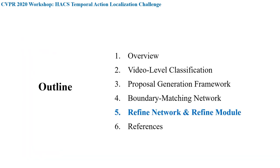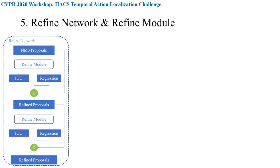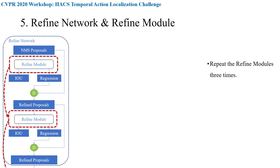Next, I will introduce our refine network and refine module. Our refine network adopts a cascade scheme — we use three refine modules to refine input proposals three times. We set IOU thresholds for assigning positive labels to 0.5, 0.6, and 0.7 respectively.